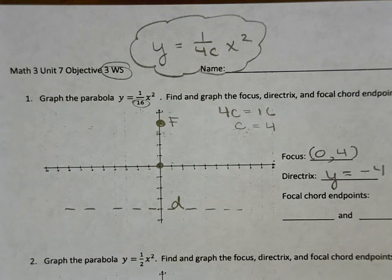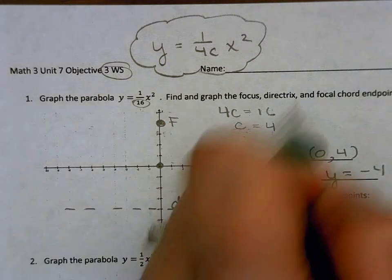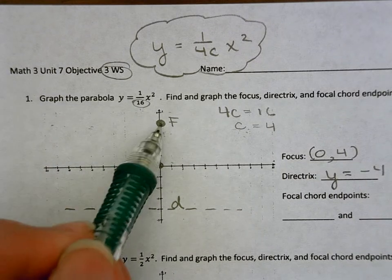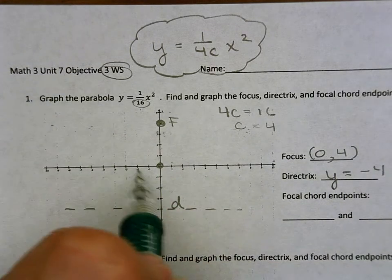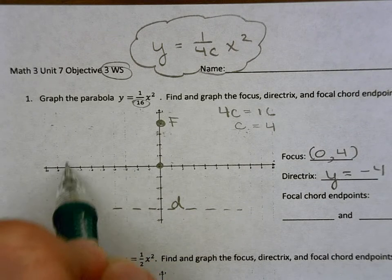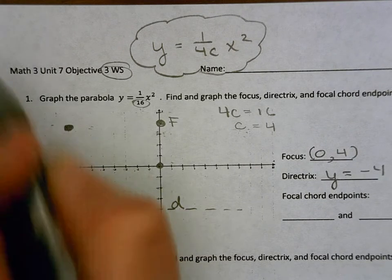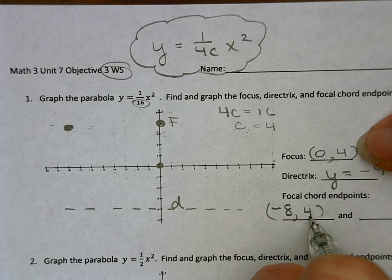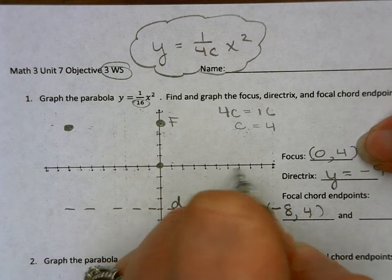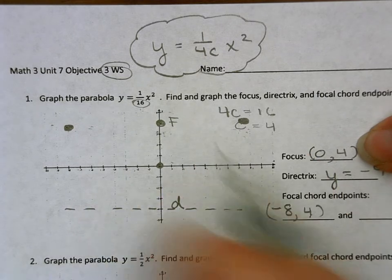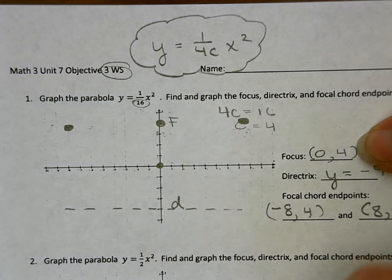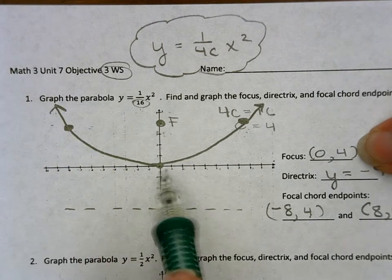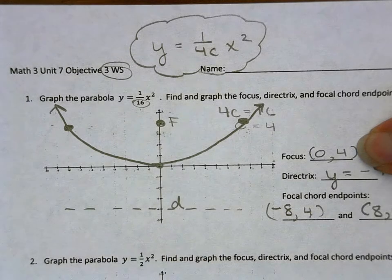So now for my focal chord endpoints, I know that that total distance when I make my parabola, and it should be a very wide parabola, needs to be a total distance of 16. So from my focus, I need to go 8 to the left and 8 to the right. So that's at negative 8 and 4, at the same height as my focus. And then this one will be at (8,4), right smack dab in the middle of my work. So I have a nice wide parabola that would be a whole lot more accurate than trying to go up a 16th and over 1.